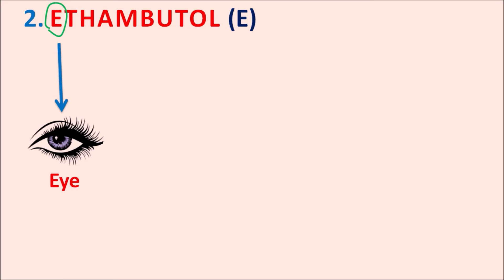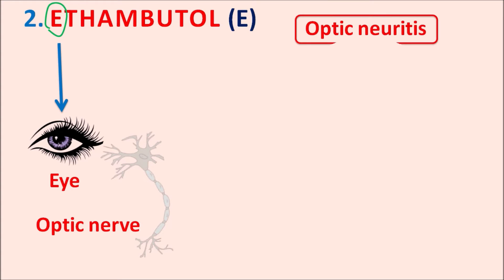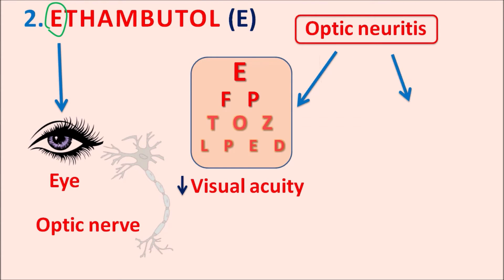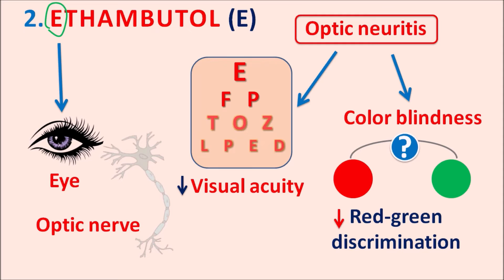The second drug ethambutol, indicated by E, affects the eye. It produces optic neuropathy — specifically optic neuritis, which is inflammation of the optic nerve resulting in loss of vision. Ethambutol decreases visual acuity and can produce color blindness, particularly decreased red-green color discrimination. Patients may also experience blurred vision, and in severe cases, irreversible blindness.